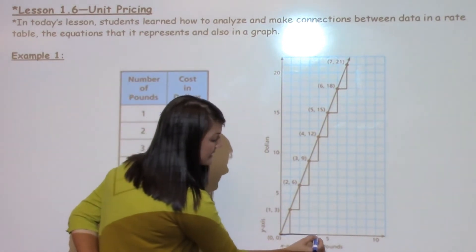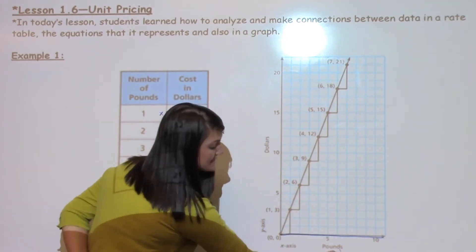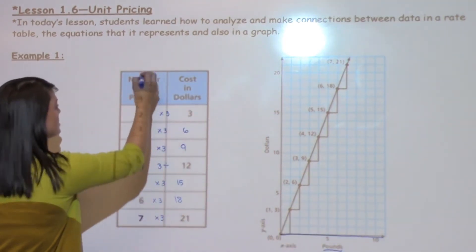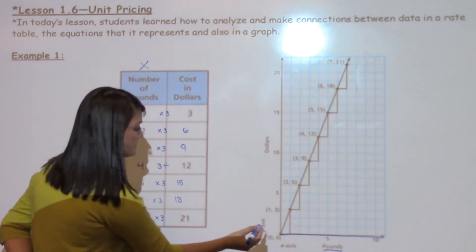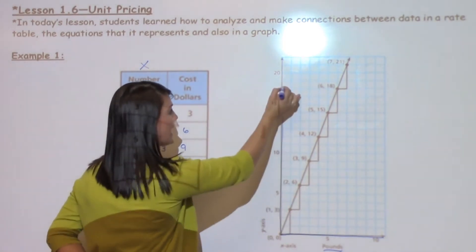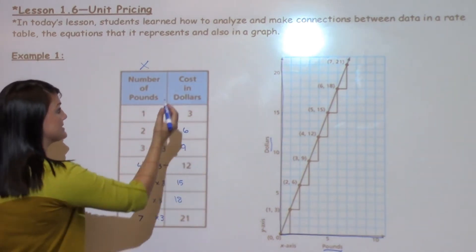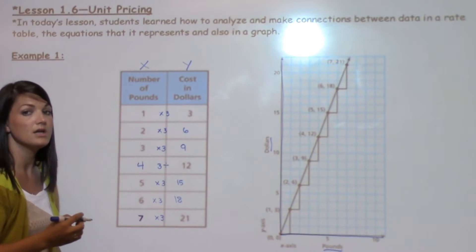We have here our x-axis going across, and it's labeled pounds. So everything on this line should be showing my pounds. Then I have my y-axis going up, which is labeled dollars. So everything on the y-axis should be from this column here, the dollar column.